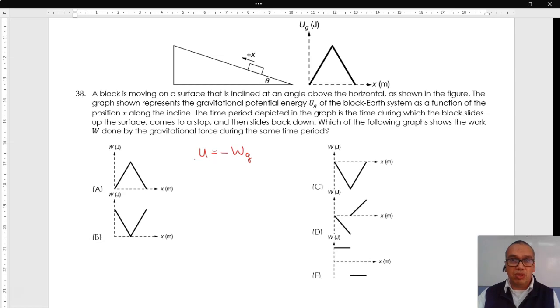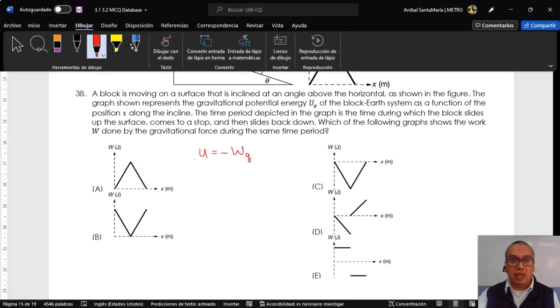Since the two values are opposite at any position, the graph for work will be the reflection of the graph for potential energy at all points relative to the position axis, that corresponds to option C.